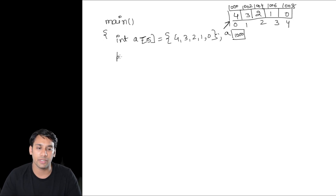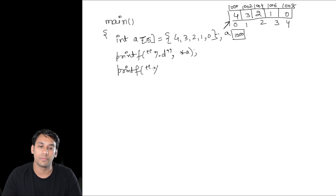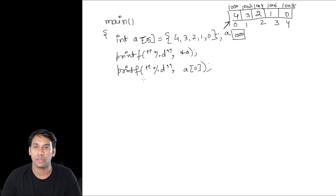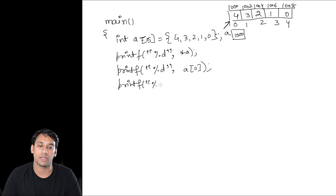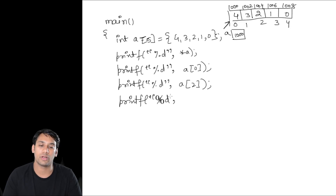Now if I print: printf("%d", *a). In the next line I am printing printf("%d", a[0]). In the next line I am printing printf("%d", a[2]). In the next line I am printing printf("%d", *(a + 2)).